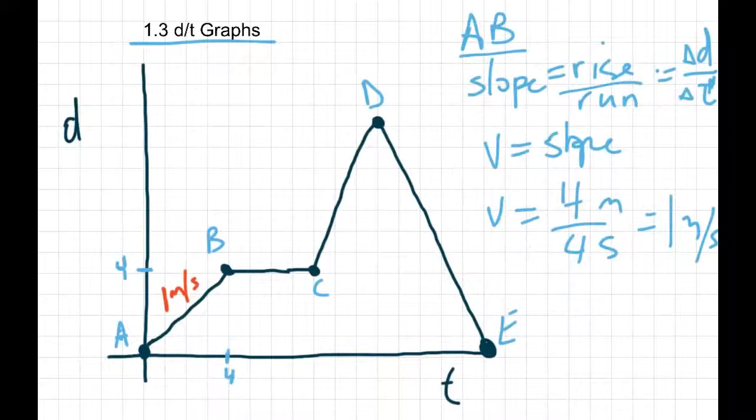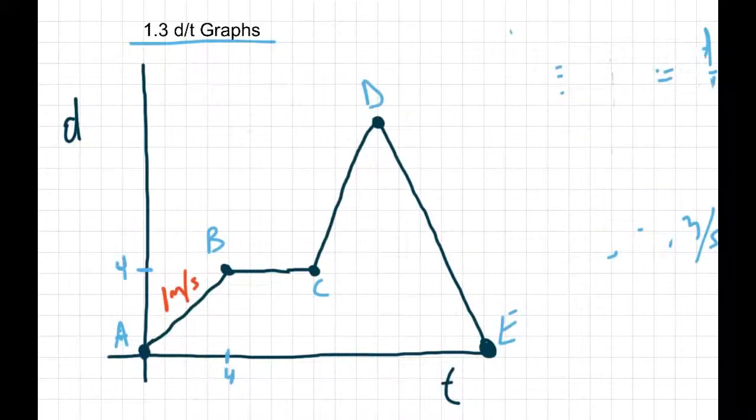Okay, let's look at section BC. So on the same grid, what's happening from section B to C? So our distance isn't changing, right? We're staying at a distance of 4, but our time has gone from 4, 5, 6, 7, 8, so we've increased our time, but we haven't changed our distance.